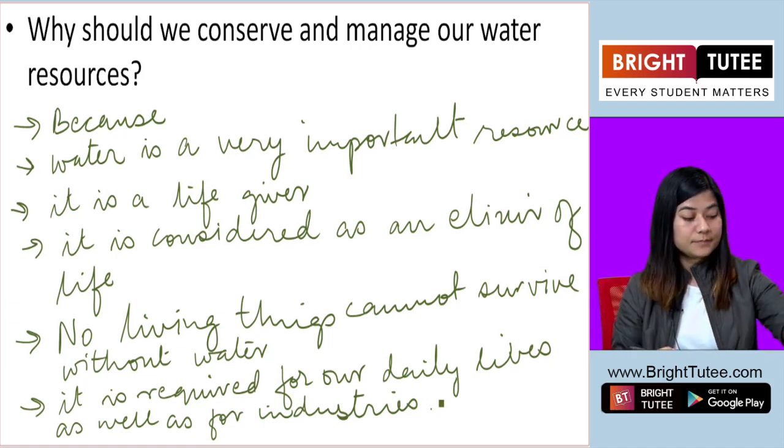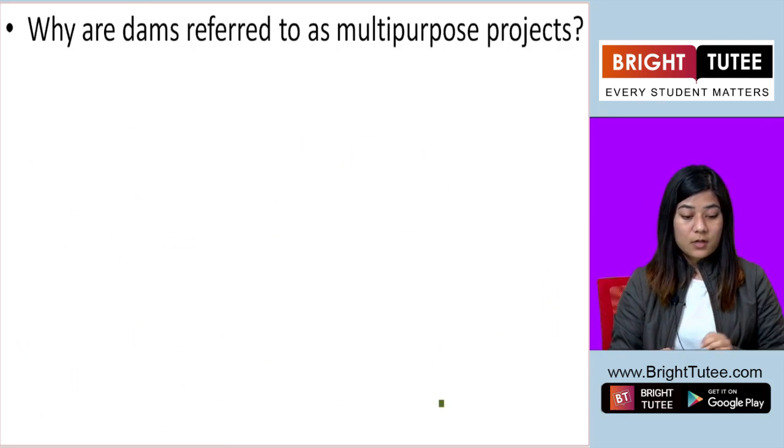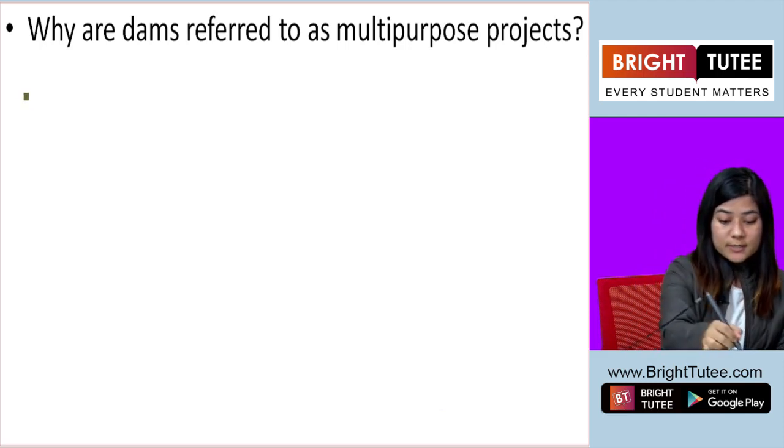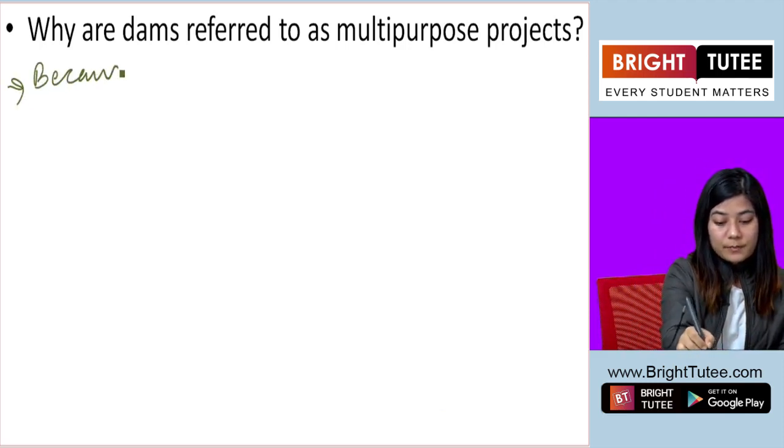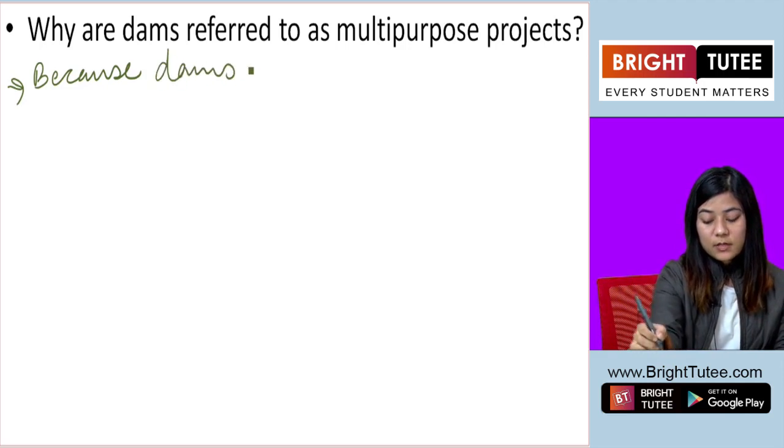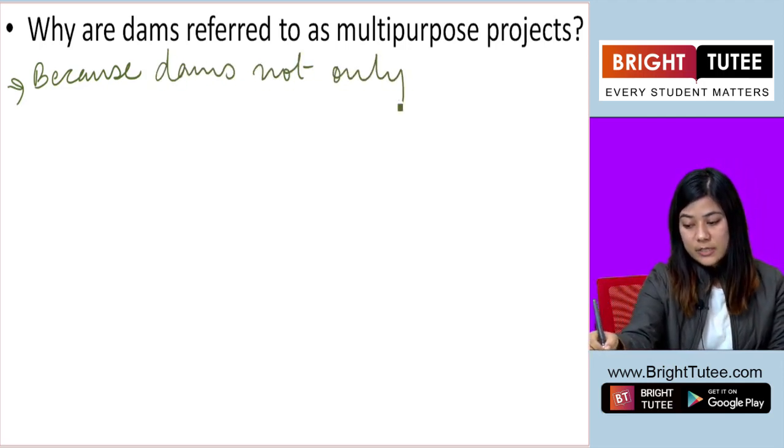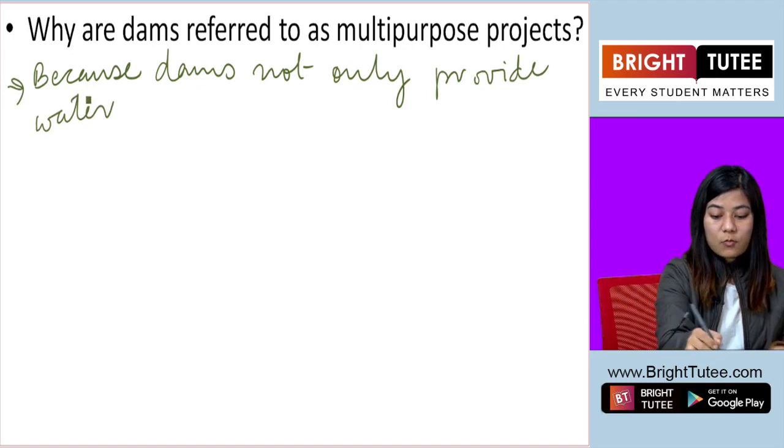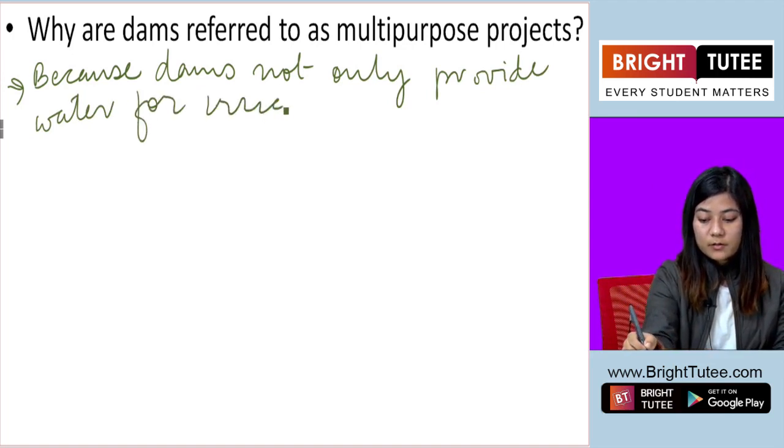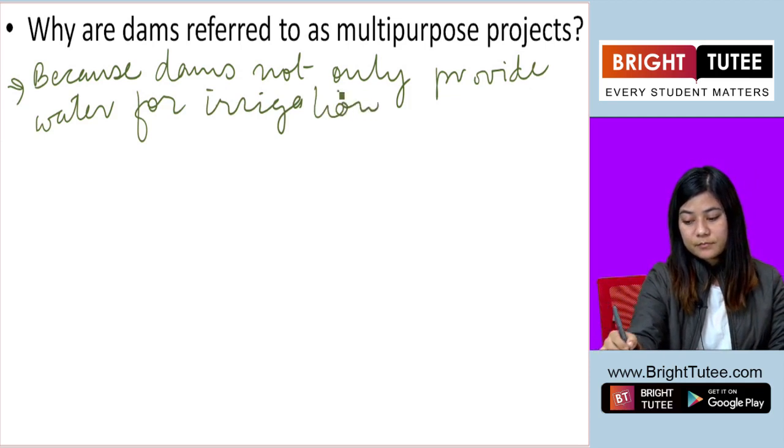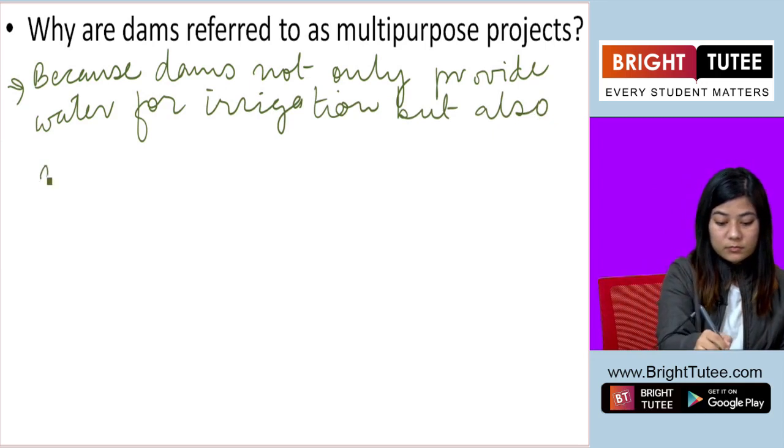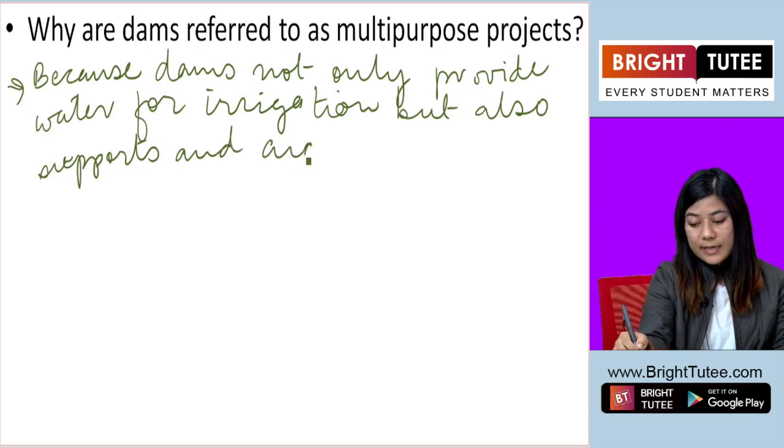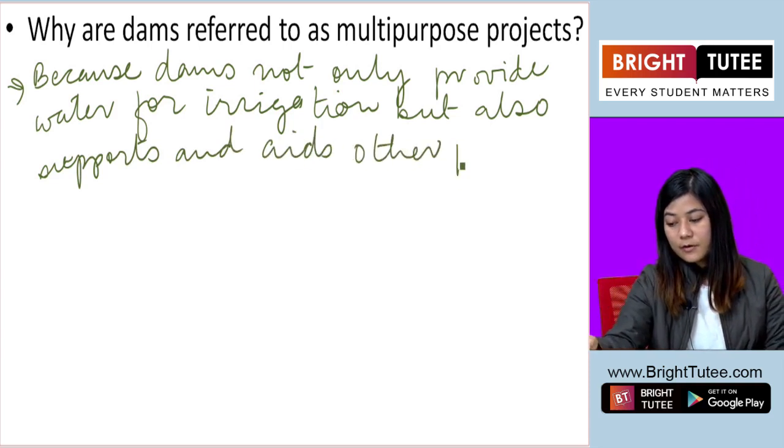To be conserved and managed. So the next question is: why are dams referred to as multi-purpose projects? Because dams not only provide water for irrigation but also support and aid other functions.